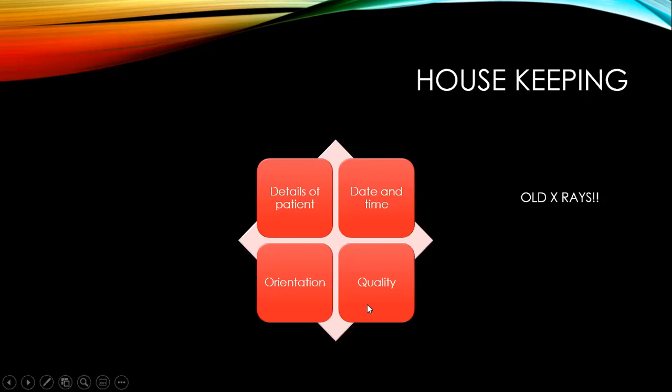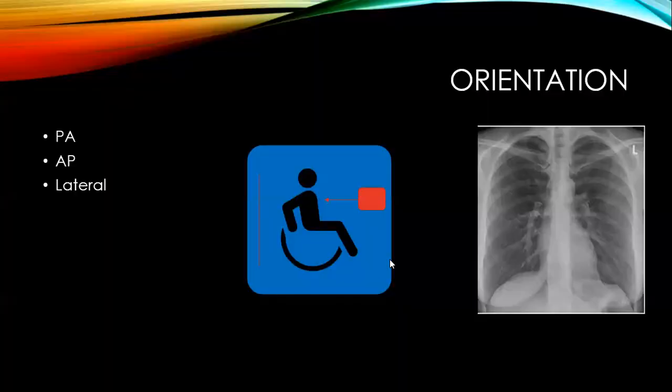So a bit of orientation. There are three ways an X-ray can be taken: PA, which stands for posterior-anterior; AP, which stands for anterior-posterior; or looking at the chest from a lateral perspective. We're only going to talk about the first two.